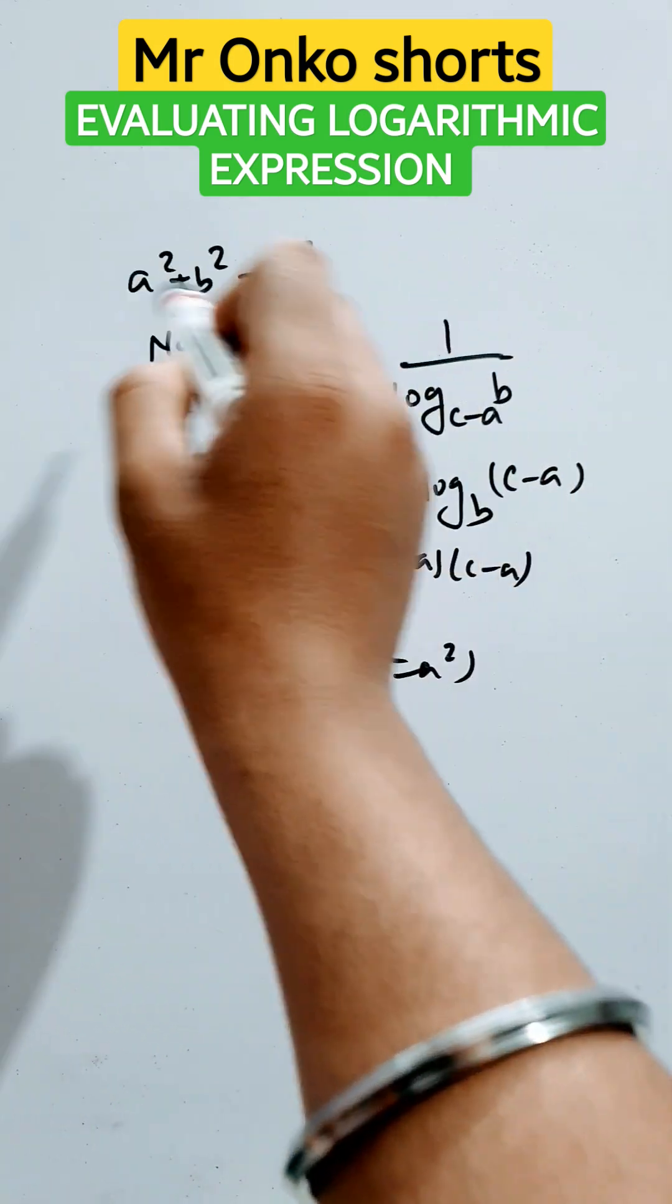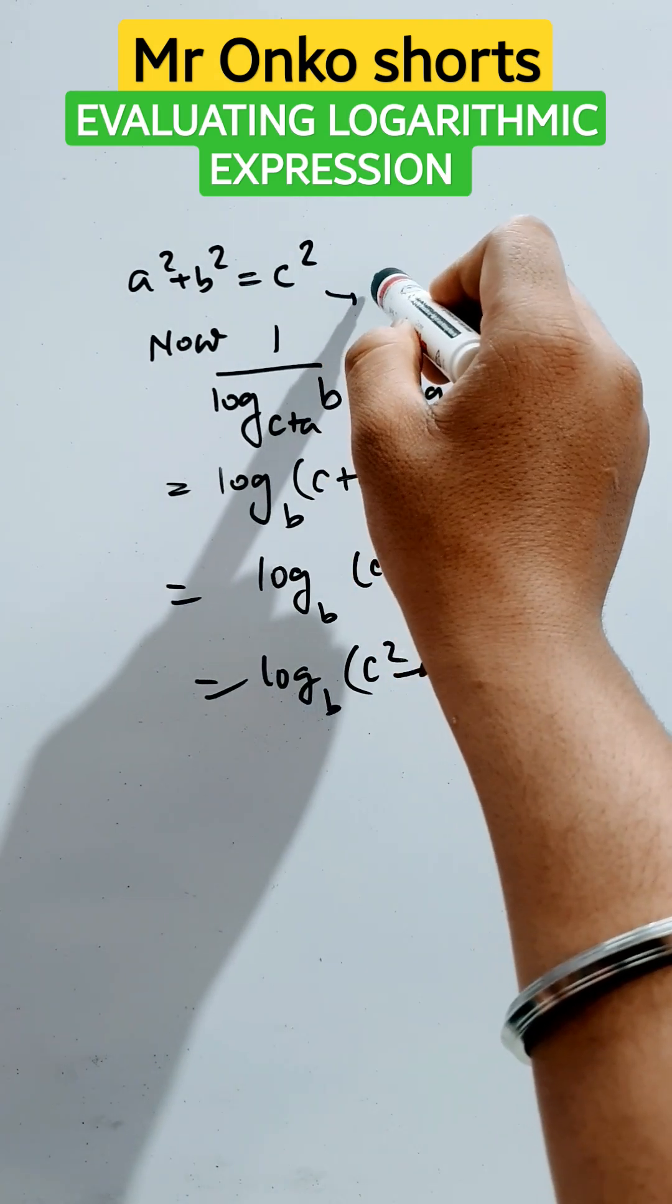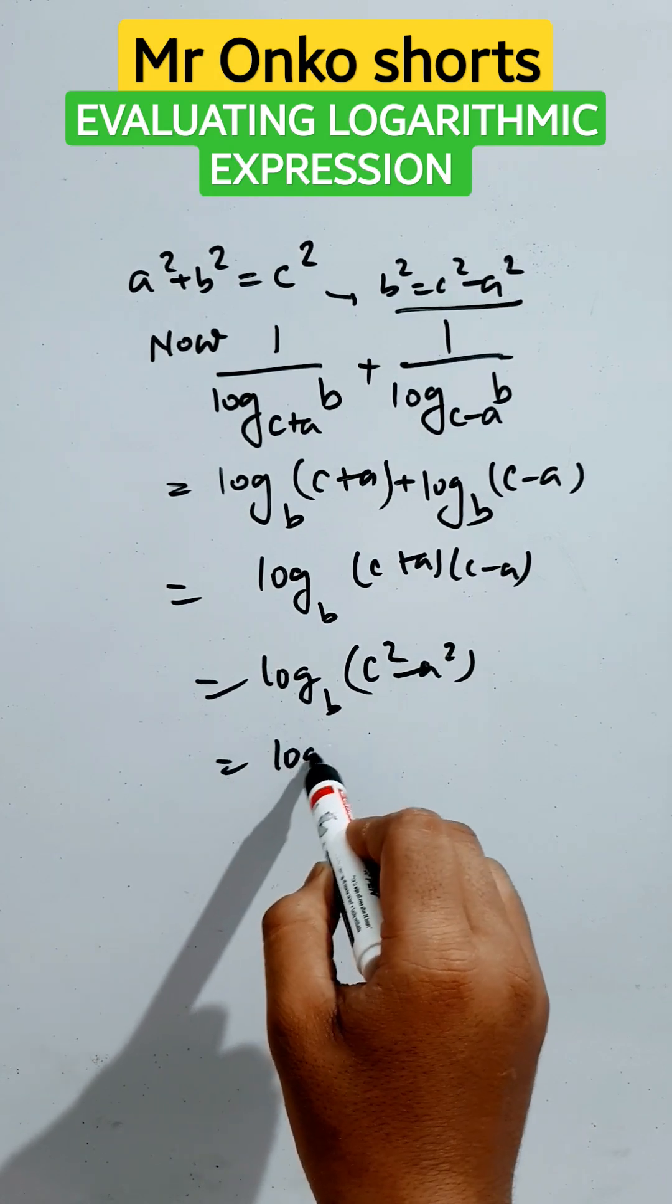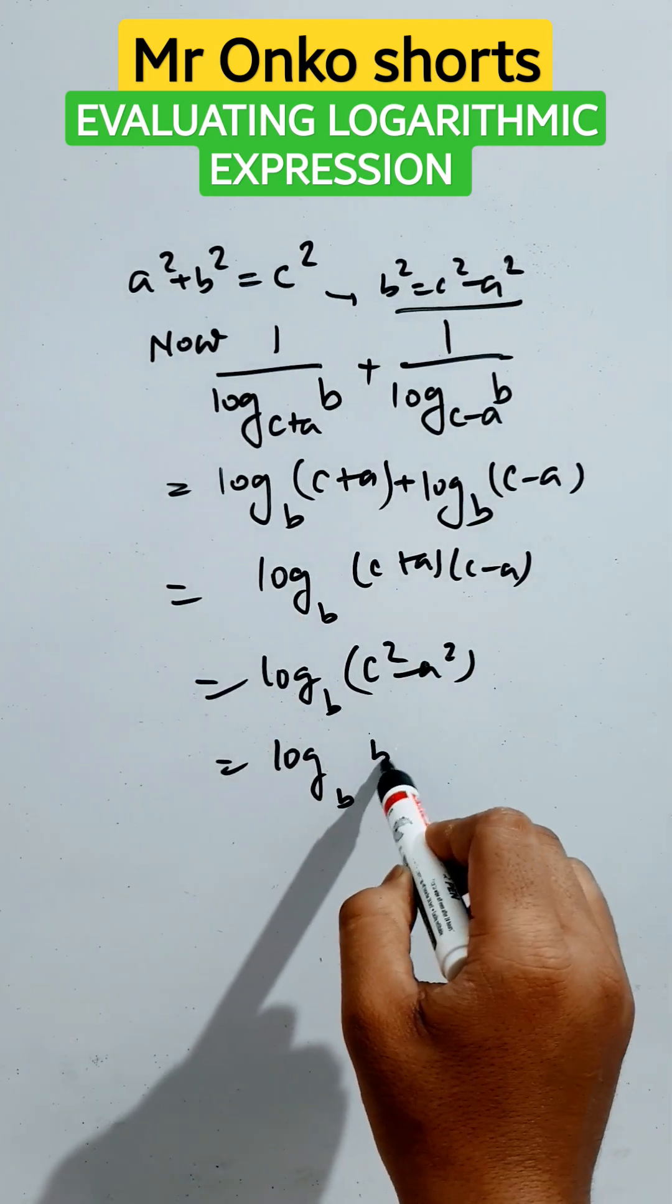Now from here, from this given condition, we can write it as b square equals c square minus a square. So put the value of c square minus a square as b square.